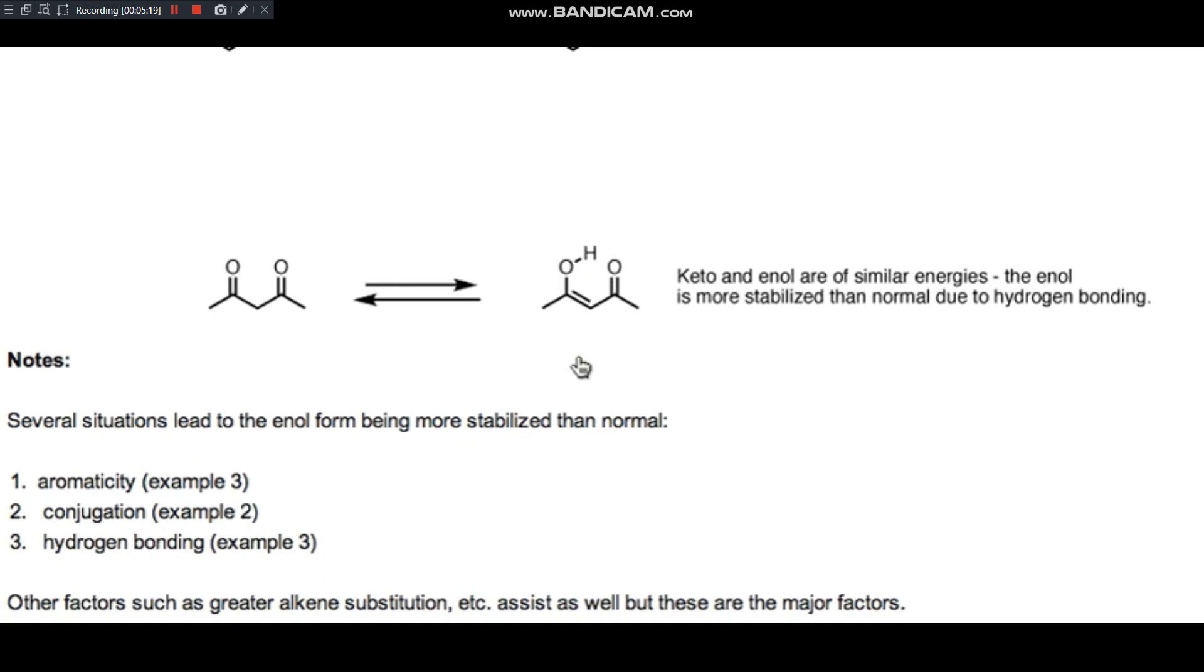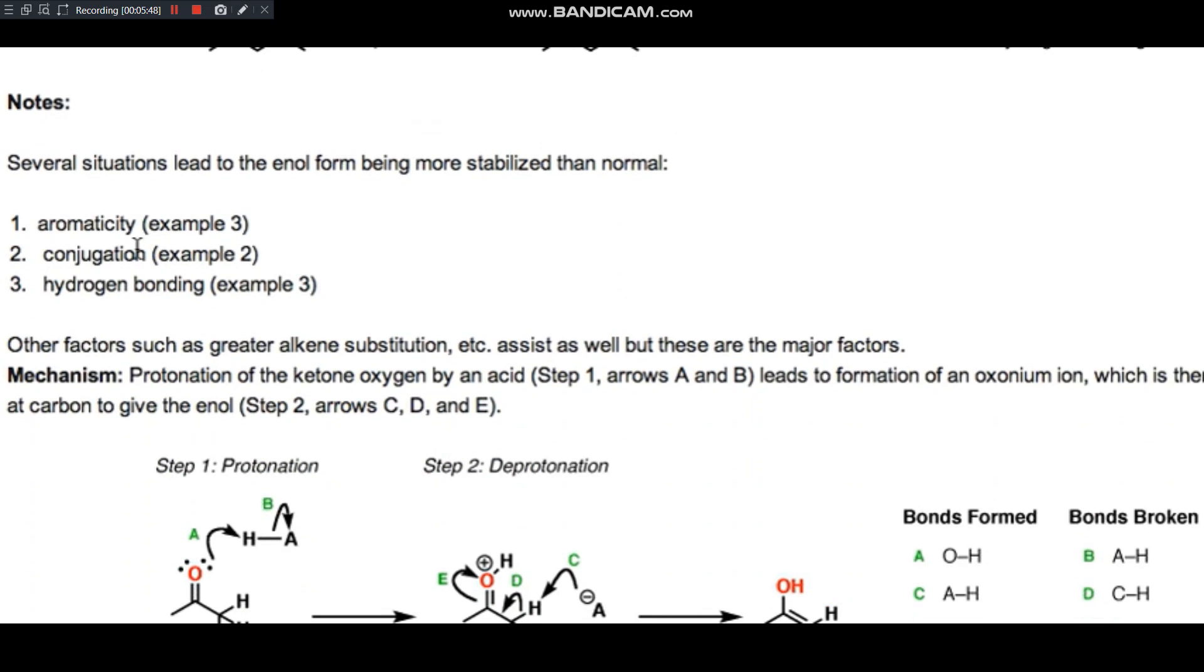And there's one last factor which affects the keto-enol-tautomerism ratio. And that is that if you can form an enol in which you have a nice hydrogen bond, such as this, this is called a beta-diketone, the enol can hydrogen bond with the adjacent ketone. And this will stabilize the enol form relative to a normal keto form. So it's somewhat obscure, but it does come up. Okay. So aromaticity, conjugation, and hydrogen bonding are all factors which can favor the enol form versus the keto form.